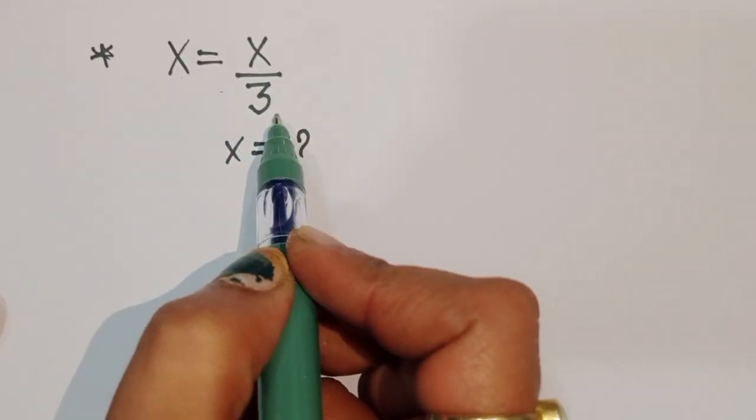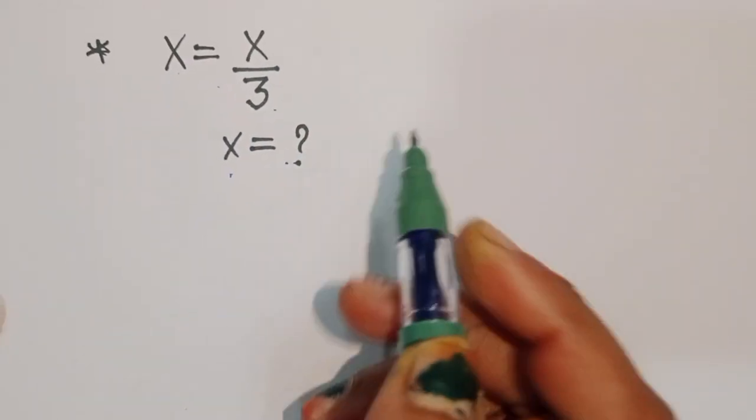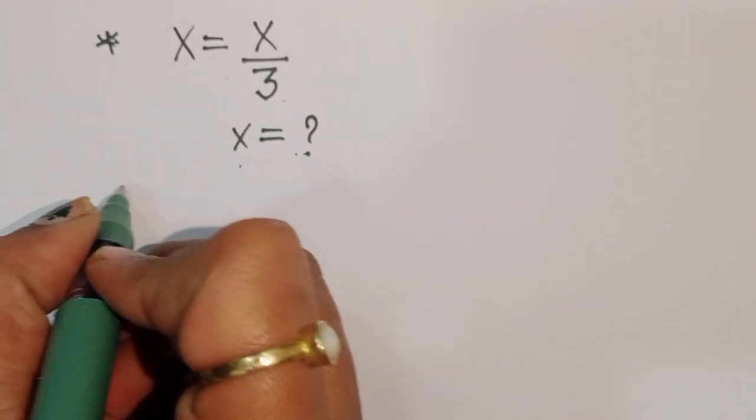Given x is equal to x/3, we have to find out the value of x. How can we find out? Let's see the solution.